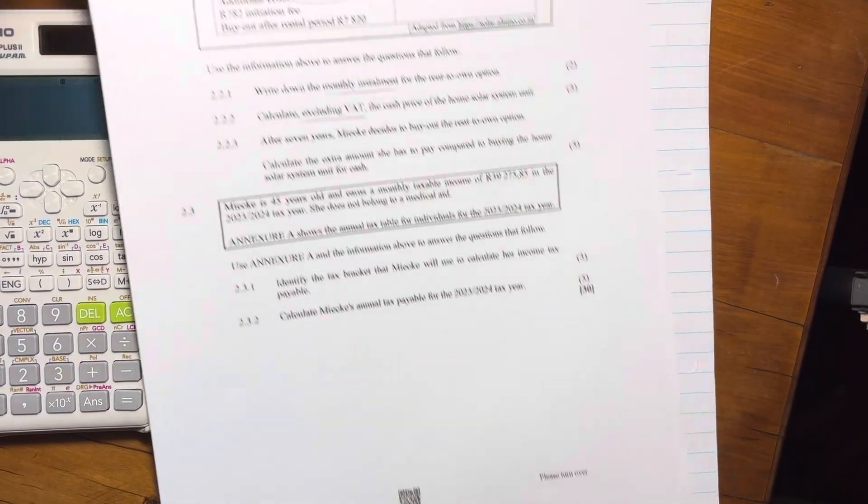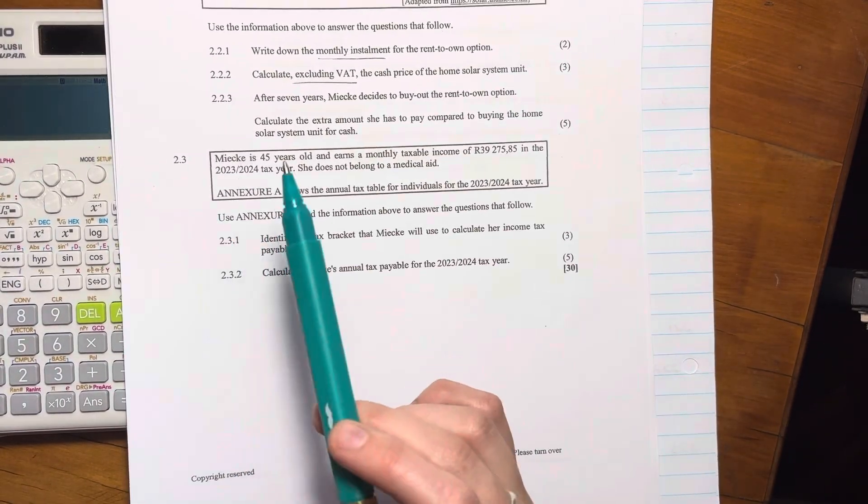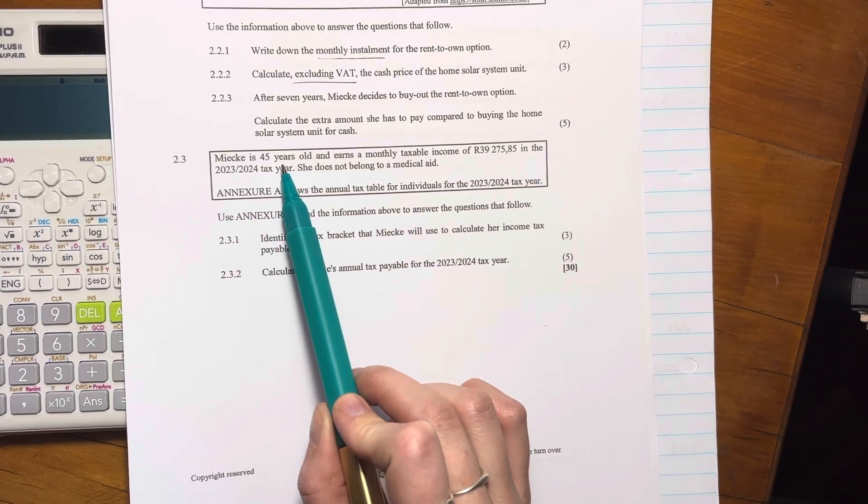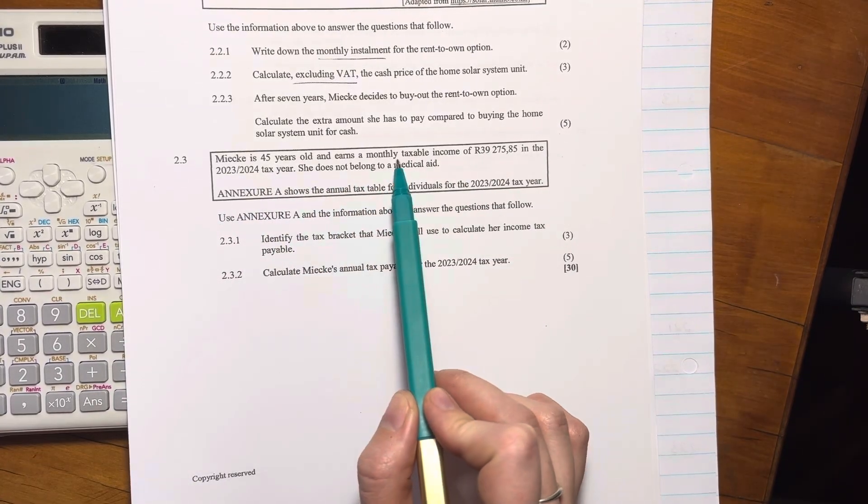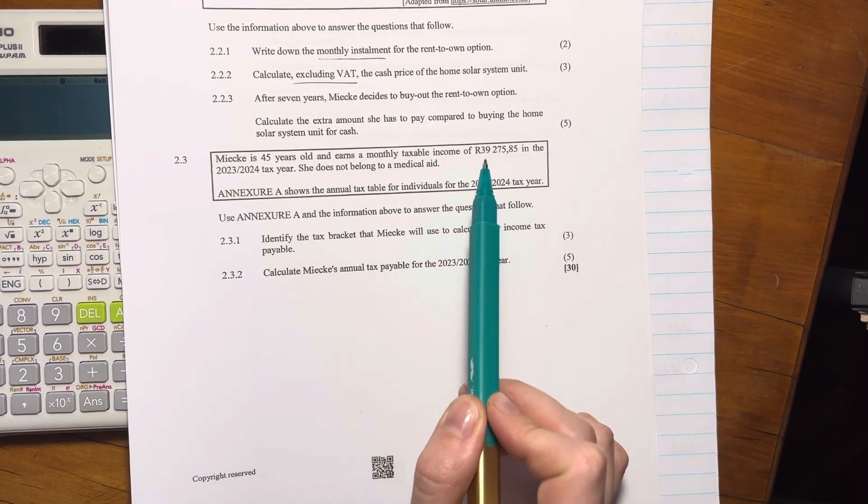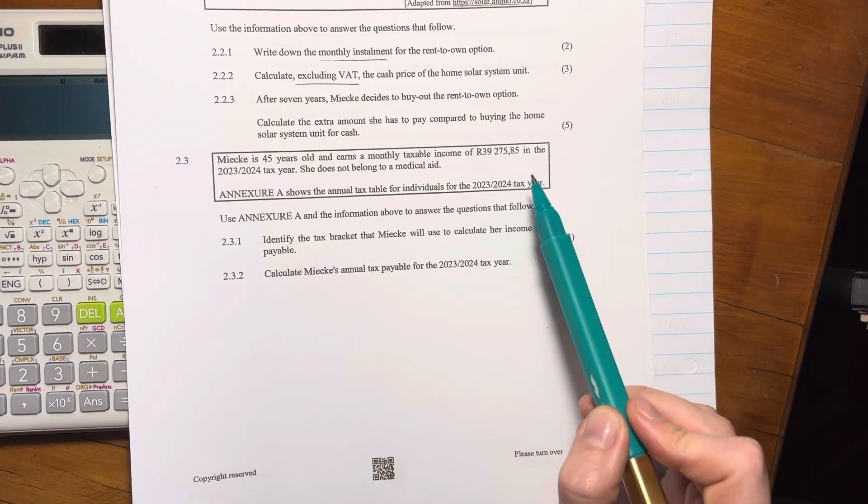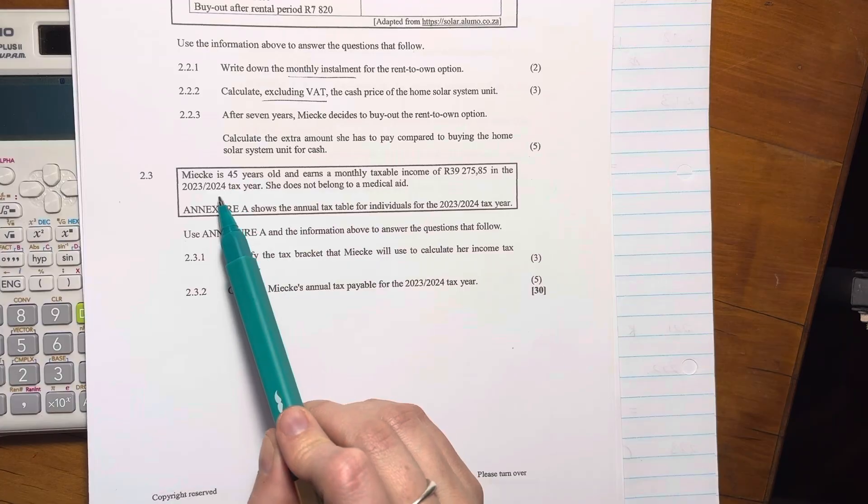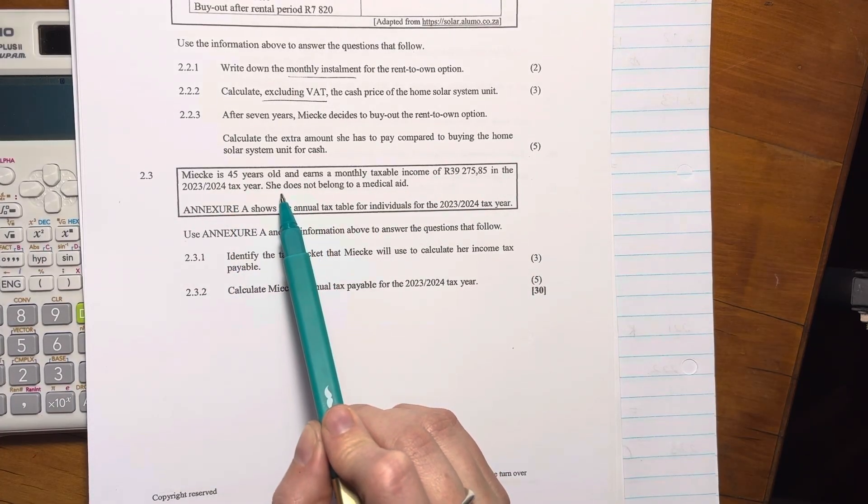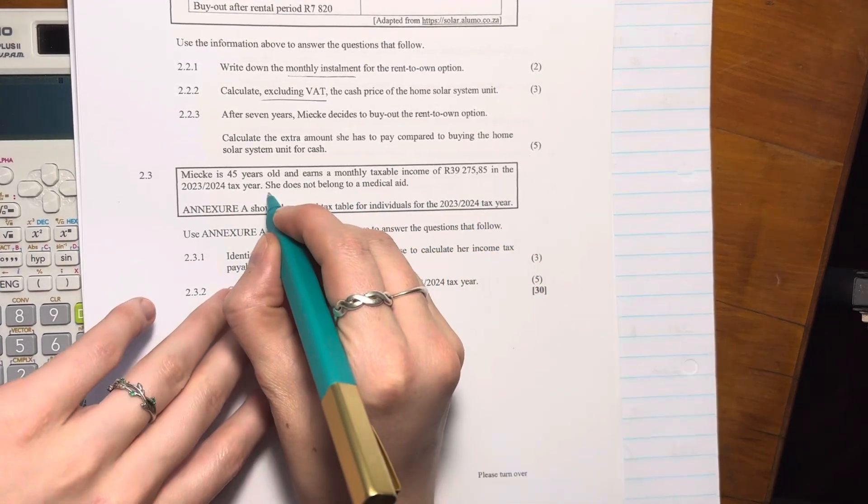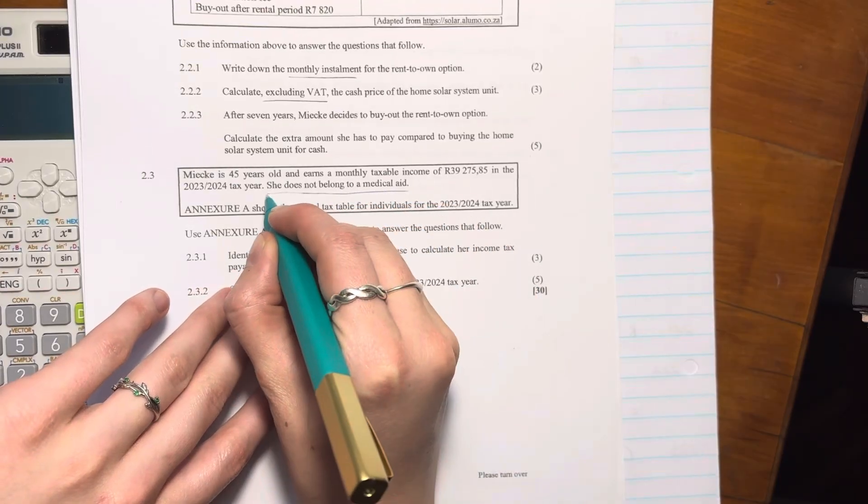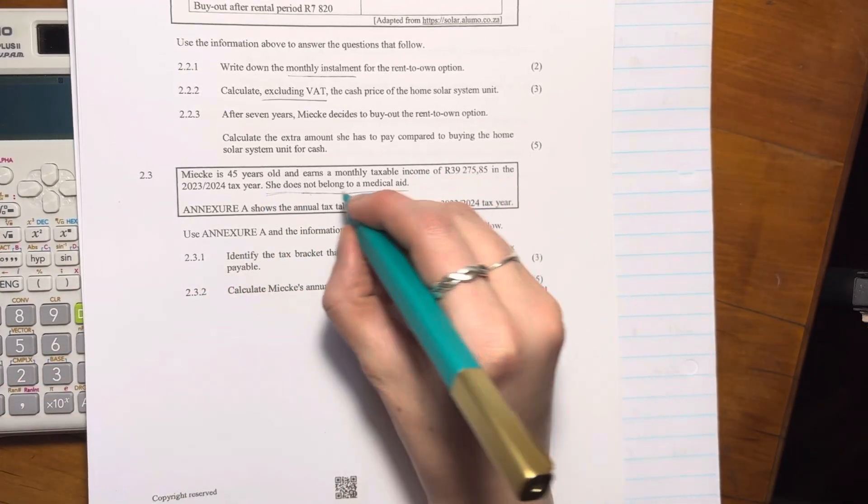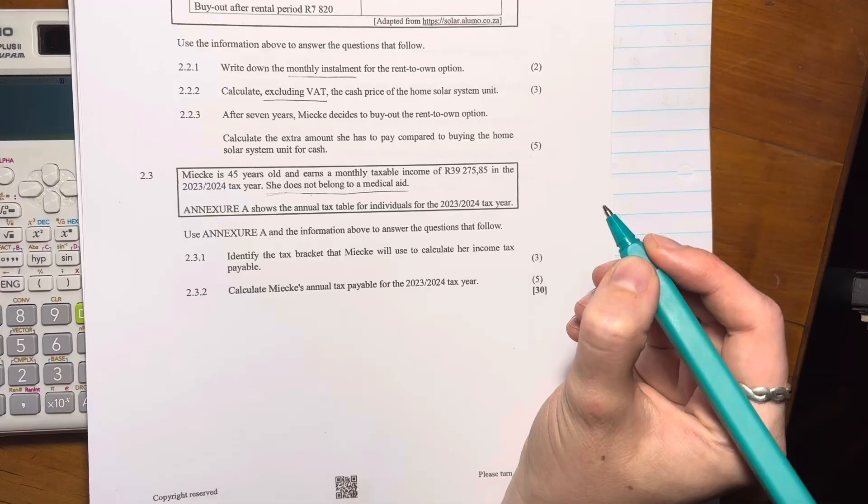Right, we're looking at this question now, 2.3. So Mika is 45 years old and earns a monthly taxable income of $39,275.85 in the tax year 2023-2024. She does not belong to medical aid, so that's quite important because remember when you belong to a medical aid you get rebates. So that's very important to actually do a tax calculation.